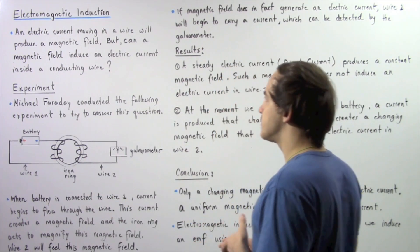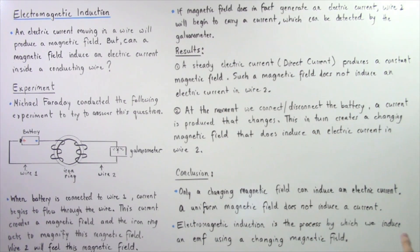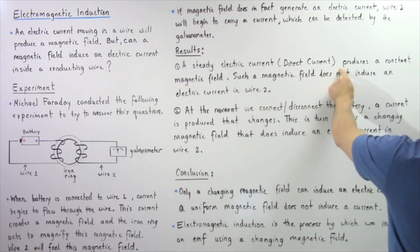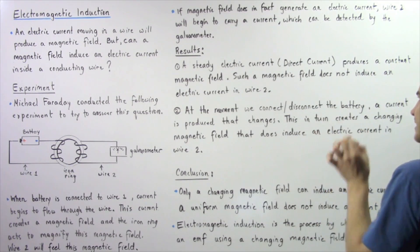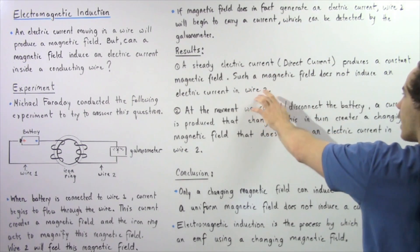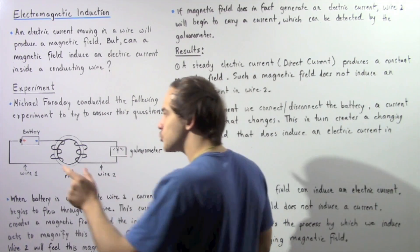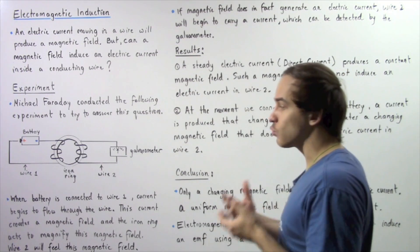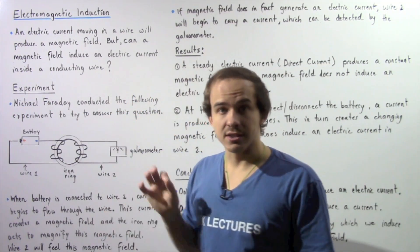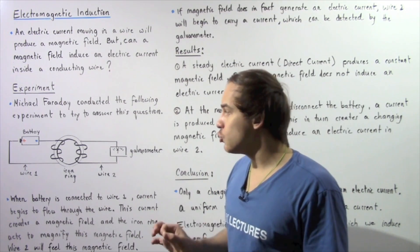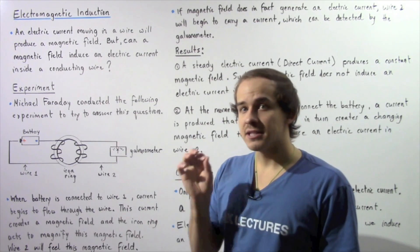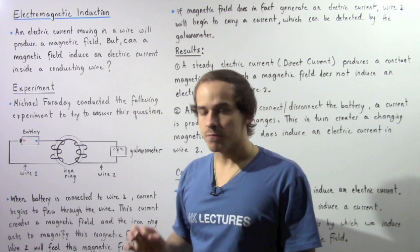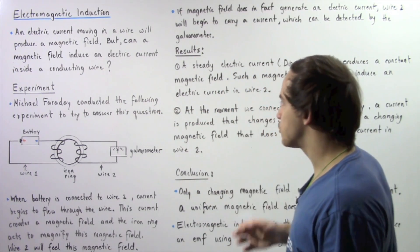Looking at the actual results of this experiment, the first important point is: a steady electric current — a direct current — produces a constant magnetic field. Such a constant magnetic field does not induce an electric current in wire number two. Once our current becomes steady and constant, it produces a constant magnetic field, and that constant magnetic field will not induce an electric current in wire number two. The galvanometer will read no current.